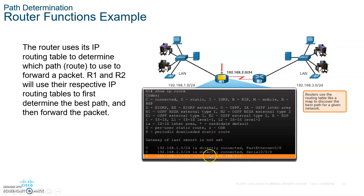The packet is dropped because the gateway of last resort is not set. ICMP will then create a message going back to you saying the device or network you're trying to reach is unreachable — meaning the router has no entry in the routing table to forward your packet anywhere.